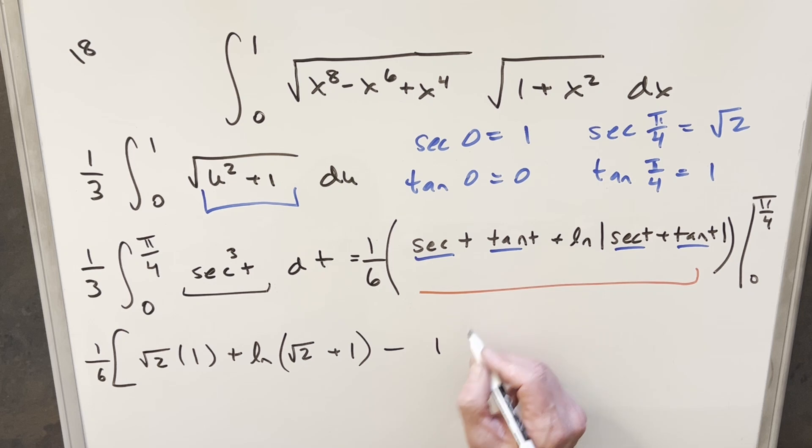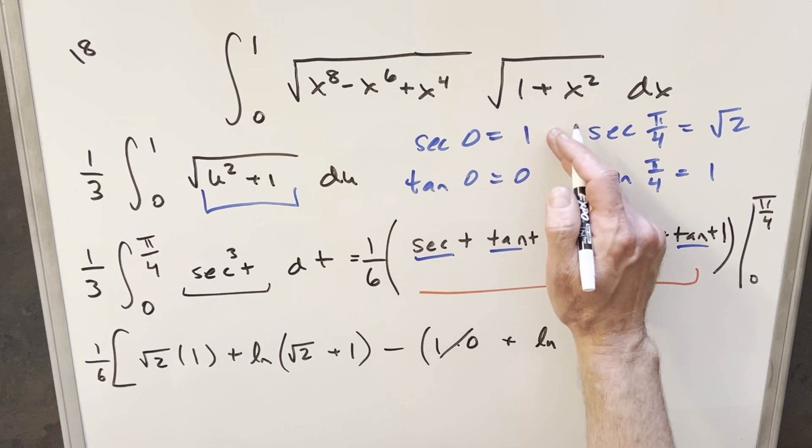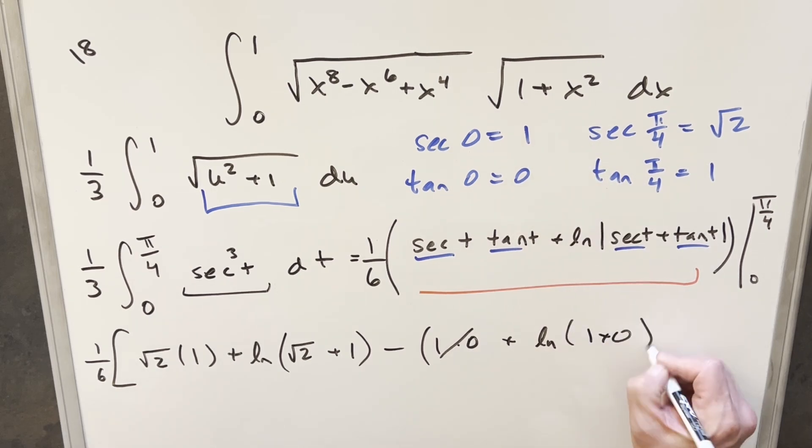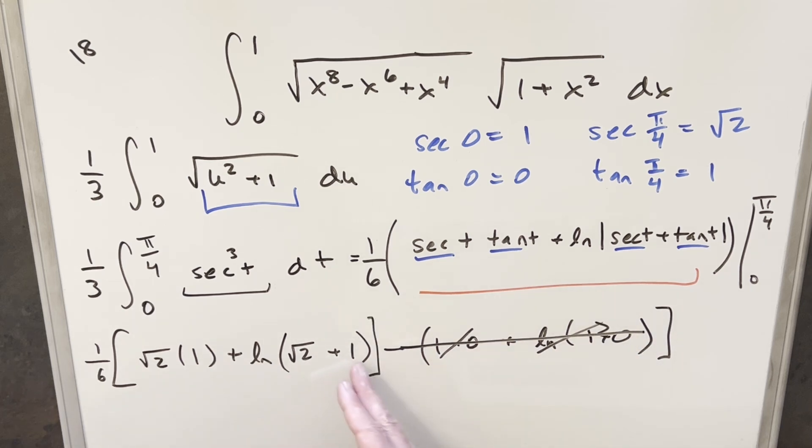but this is going to be 1 times 0. So that part is going away there. Plus natural log, and this is going to become 1 plus 0. But natural log of 1 is just 0, so that part's going away. This part, this, and then this whole thing here at the end, this is all 0. So we just have this piece left.